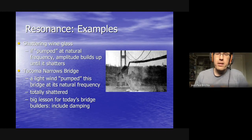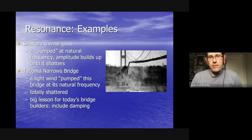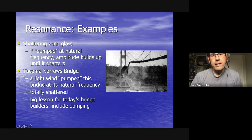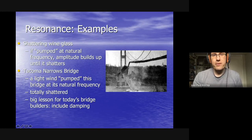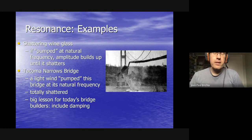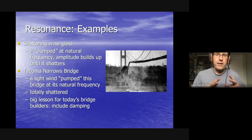A dramatic historical example is the Tacoma Narrows Bridge. The wind interacted with the bridge's physical structure, causing it to shake, buckle, and vibrate back and forth until it shook itself apart. That's why engineers now always include damping in buildings and bridges — a way of stopping vibrations from building up and destroying the structure.